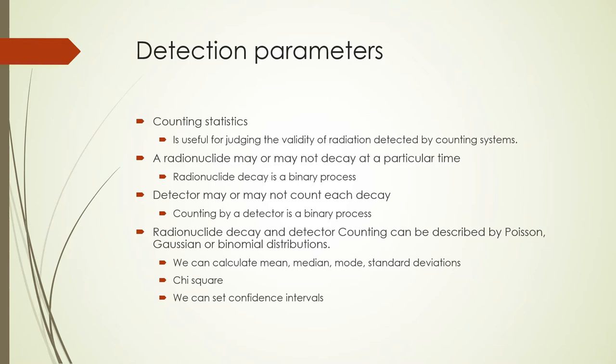Because of the random nature of these binary outcomes, they can be described by a probability distribution function. There are three probability distributions relevant to these binary processes: the binomial distribution, the Gaussian distribution, and Poisson distributions. Based on this, we can set up the detector so that we can be sure it is counting radionuclide decays correctly. Once decays are counted, we can obtain mean counts, standard deviations of counts, the errors in counts, and so on. We can even determine if the counts are random by using chi-squared analysis.